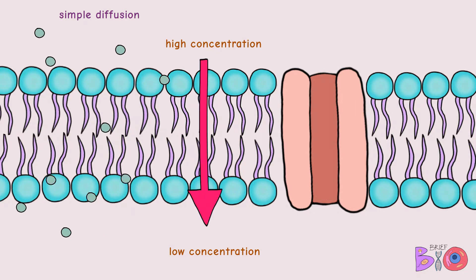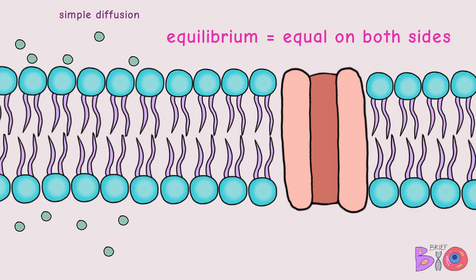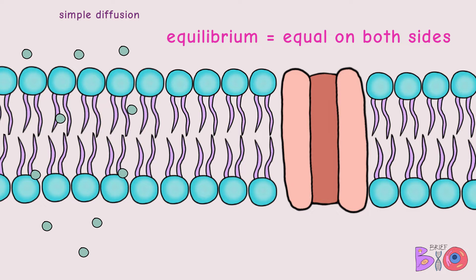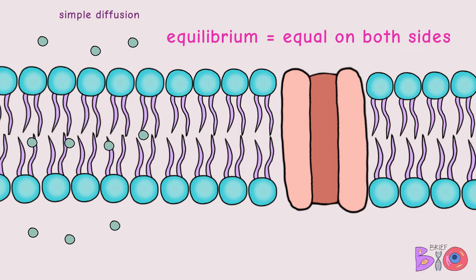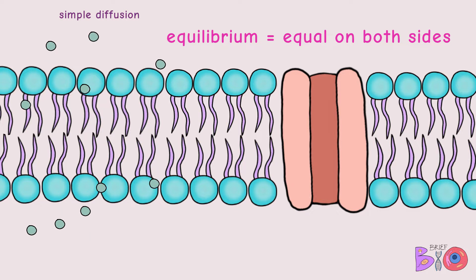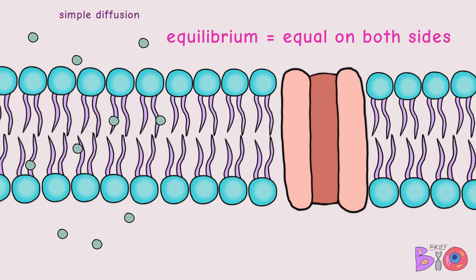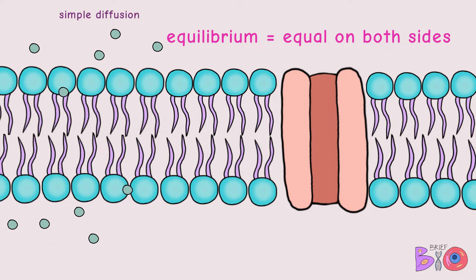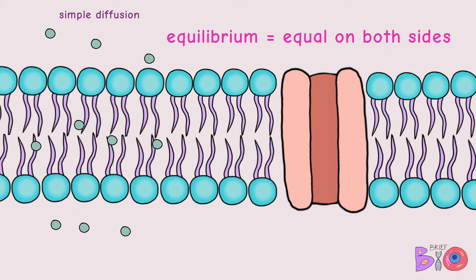The molecules will move until the concentration is equal on both sides of the membrane. Once they are equal, they are in equilibrium. They will continue to move back and forth, but at a constant rate to keep the concentration equal on both sides.